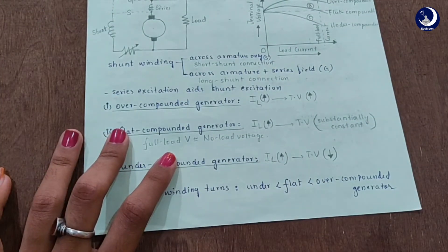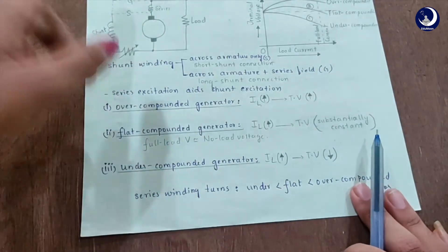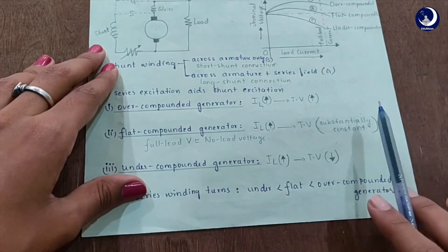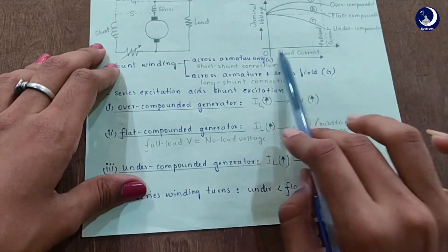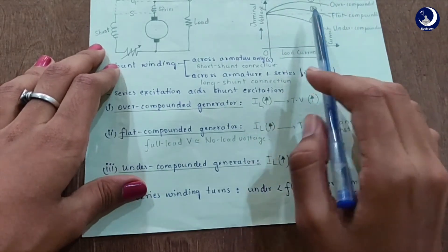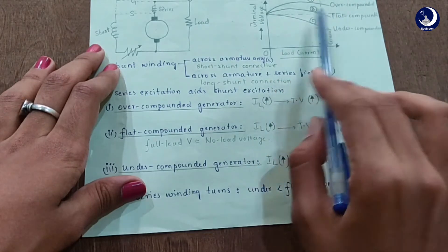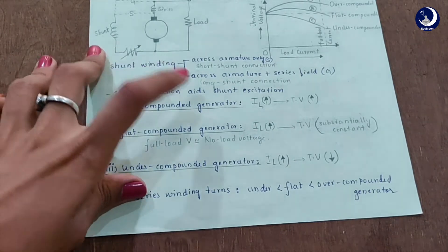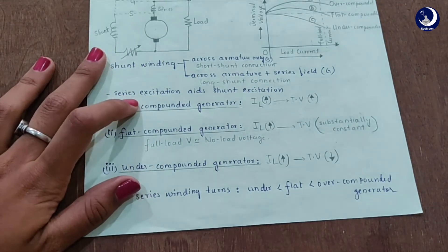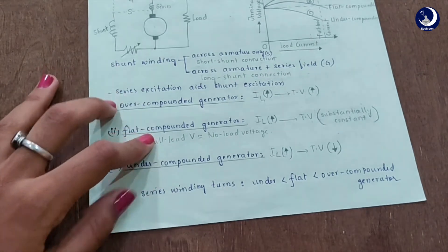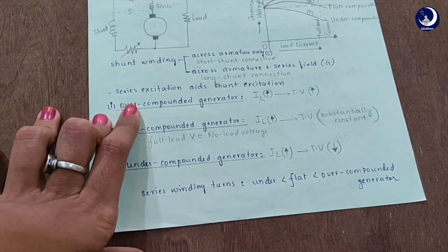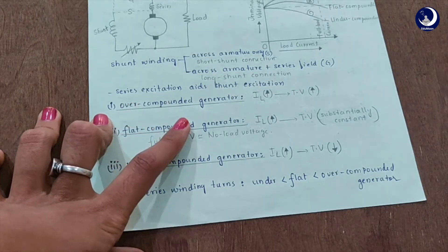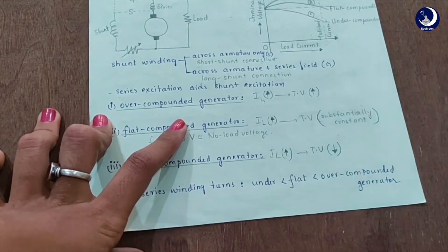In the flat-compounded generator, the series turns are adjusted so that with increasing load current, the terminal voltage is substantially constant. As you can see on the graph, with increasing load current, the terminal voltage remains nearly equal to the full load terminal voltage, shown by the dotted line. The series winding has fewer turns compared to the over-compounded generator, so the flux does not increase as much for a given load current, and consequently the full load voltage is nearly equal to the no-load voltage.